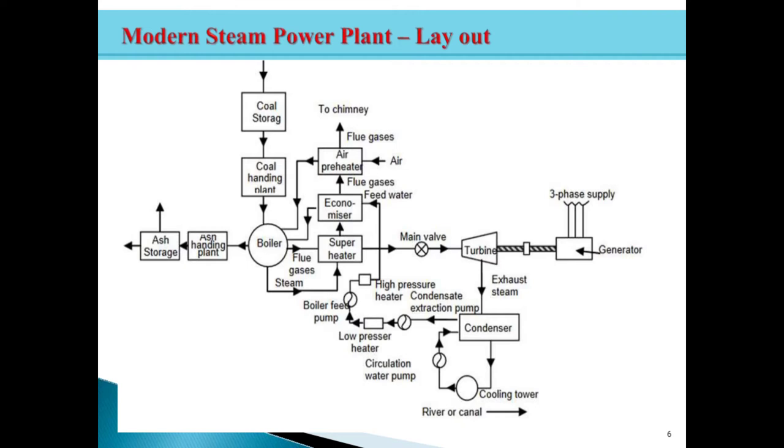The major components are boiler, boiler having the accessories and mountings and turbine. And turbine is coupled with generator, condenser, cooling tower, feed water pump and ash handling. This is the layout of modern steam power plant.